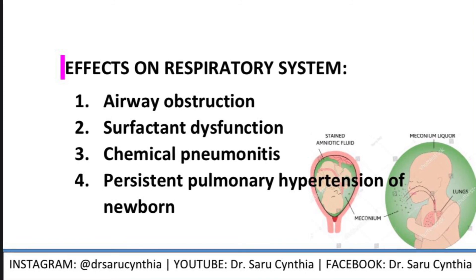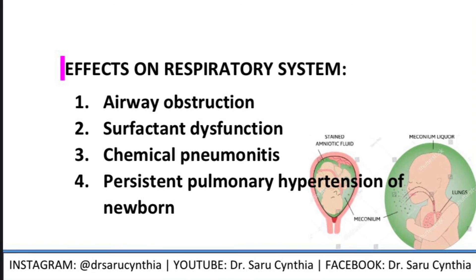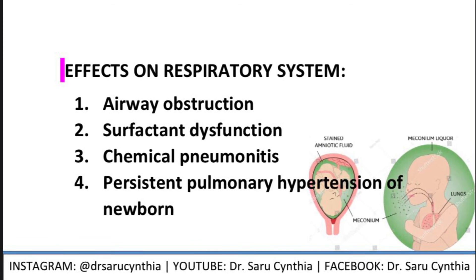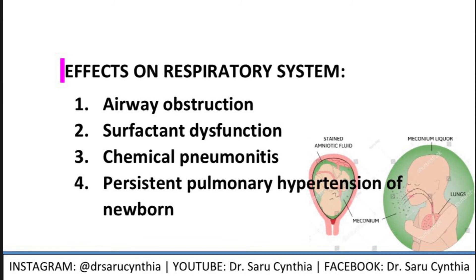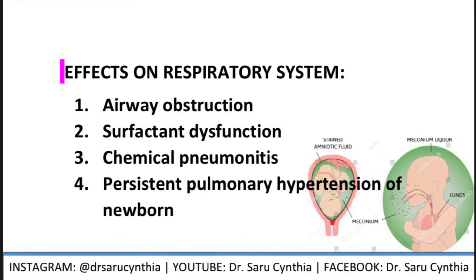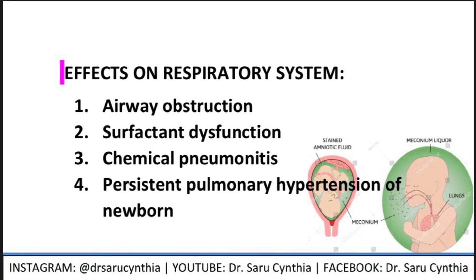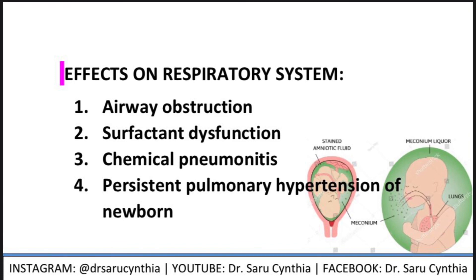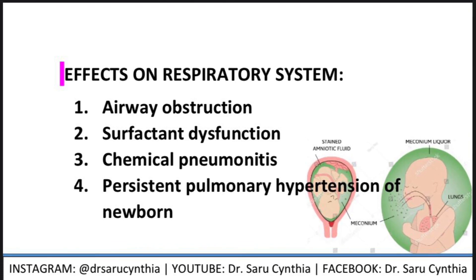The third effect is chemical pneumonitis. Without going into deep details, it has to do with enzymes, bile salts, and free fatty acids found in meconium that initiate that process. The fourth effect is persistent pulmonary hypertension of the newborn, which can be secondary to chronic in utero stress and thickening of the pulmonary vessels. This condition worsens in hypoxemic states, which this baby is already in.